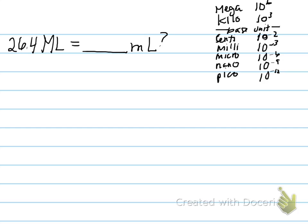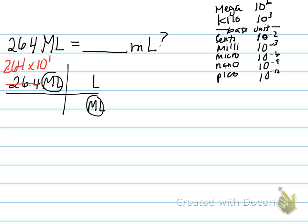Here we have another problem: 26.4 megaliters equals how many milliliters? The first thing we want to do is put our given into the first box of a factor label, and the second thing is convert that given into scientific notation. 2.64 times 10 to the 1st megaliters. Now we want to place the same units down below in the next box as are given, so that they'll cancel. And we're going through the base unit again.